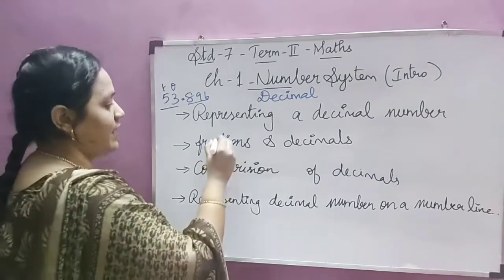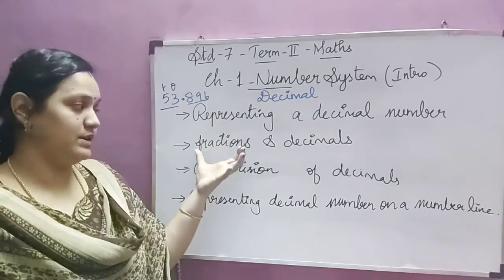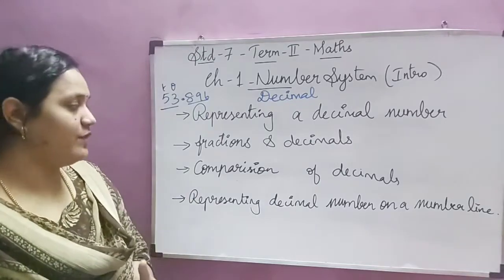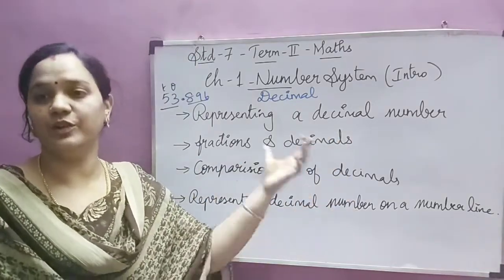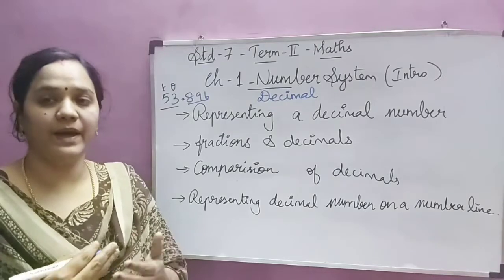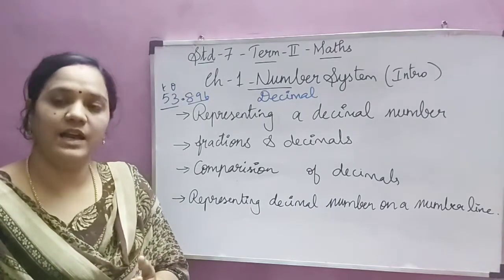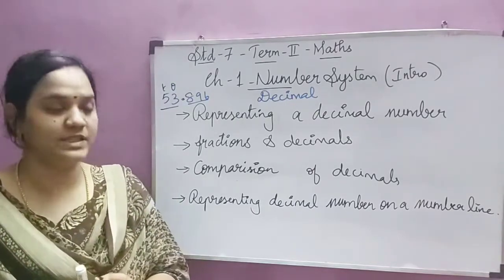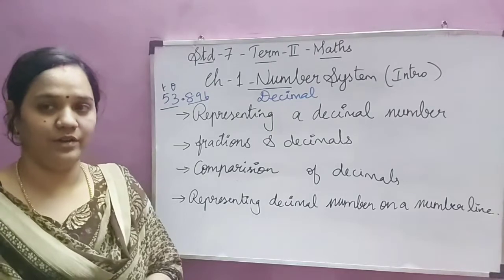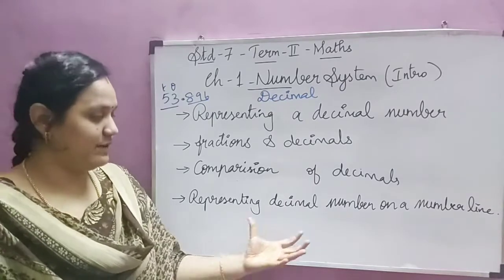The second concept is fractions and decimals. We are going to see fractions as well as decimals and also the conversion — how we convert a fraction to decimal and decimal to fraction. Next is comparison of decimals: decimal numbers with equal decimal digits and decimal numbers with unequal decimal digits. The last concept is representing a decimal number on a number line.